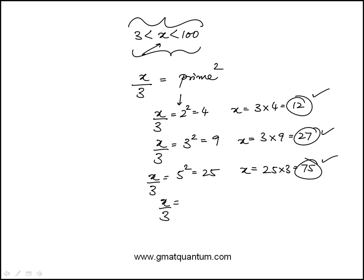The next one would be 7². 7² is 49, about 50. 50 times 3 is about 150, which exceeds 100. So we only have 3 such values for x. The answer is 3, choice B.